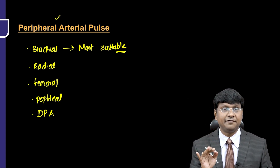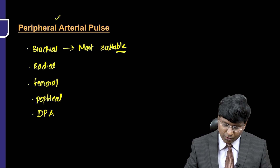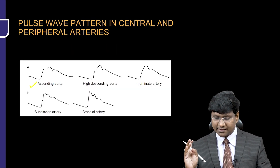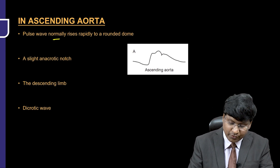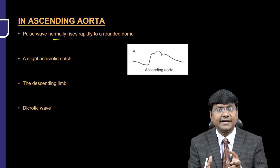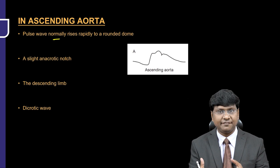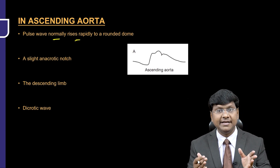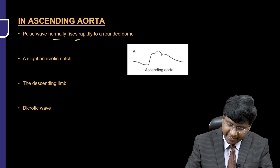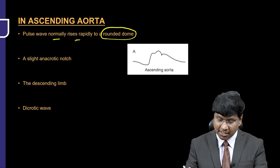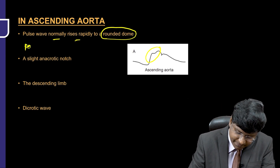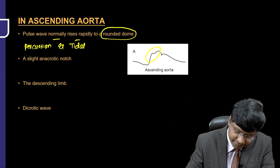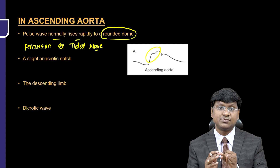Now let me discuss the difference in the waveforms in the central versus peripheral vessels. In the central vessels — the ascending aorta, innominate, and carotid artery — the pulse wave normally rises rapidly because the ascending aorta is the first vessel to receive blood from the left ventricle. The shape of that ascending limb is a rounded dome shape, and within this rounded dome you have two waves: the percussion wave and the tidal wave.